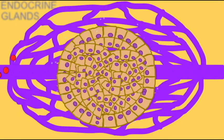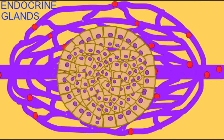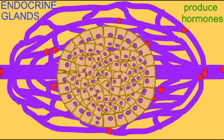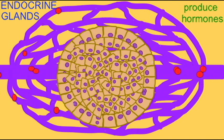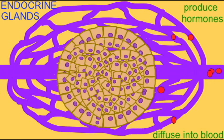Endocrine glands are also made of epithelia. Unlike exocrine glands, their products do not leave the body; instead, they diffuse into the blood. Endocrine glands make signals known as hormones, which then travel through the blood to other cells of the body. In addition, they do not travel through tubes or ducts — they simply pass directly into the blood. So endocrine glands can be distinguished from exocrine glands because they are not making products which leave the body, but rather hormones which enter the blood.